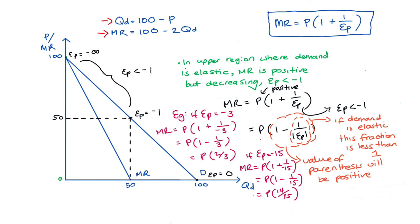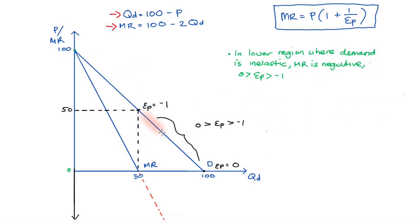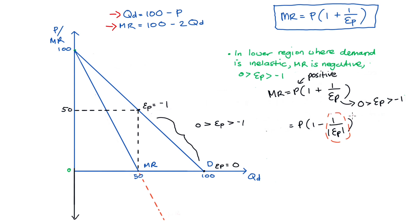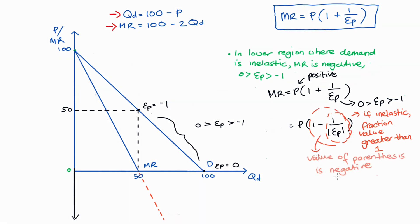We can contrast this with inelastic demand, which corresponds to the lower portion of our demand and marginal revenue curves. Price is still positive but less than 50 in this region. Our elasticity value will be between 0 and negative 1. Because elasticity is negative, we can again think of the parenthesis as 1 minus 1 divided by the absolute value of the elasticity. Since we're inelastic, the absolute value of elasticity is less than 1, so the fraction is greater than 1. Therefore 1 minus something greater than 1 gives something negative.